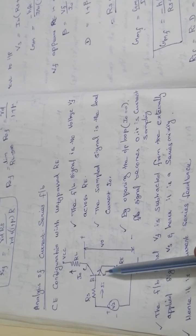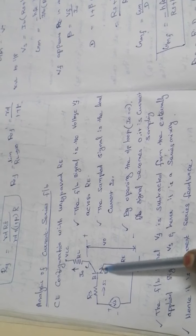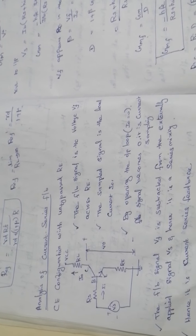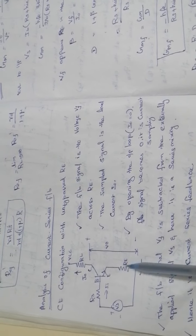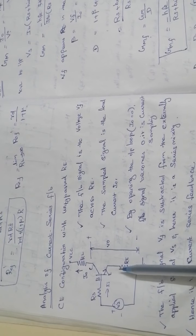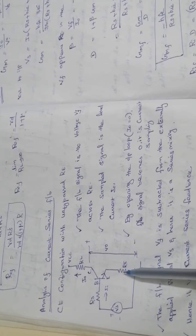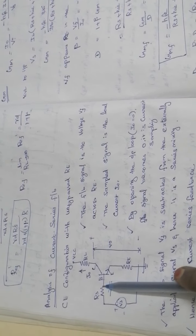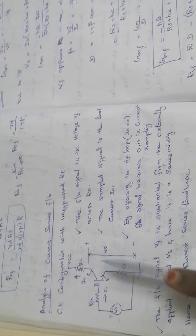To identify the feedback type: if the output voltage and feedback voltage are at the same terminal, it is voltage sampling; if they are at different terminals, it is current sampling. For the mixing network, if the feedback resistance is connected in series with the input resistance it is series mixing; if connected in parallel it is shunt mixing. The next step is to redraw the given circuit in an h-parameter model.